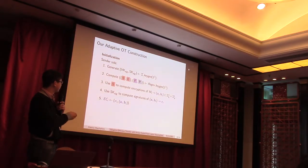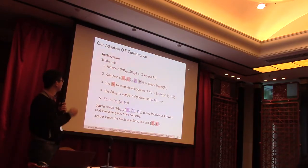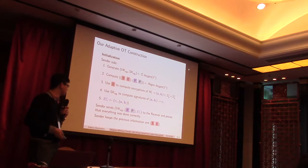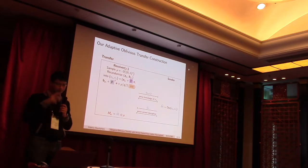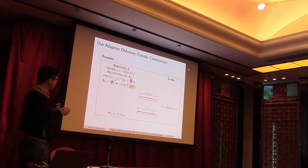We use the Regev encryption scheme and encrypt everything, plus sign everything. And then the sender sends everything to the receiver at the end of the initialization phase and prove that everything has been done correctly. Then, we enter the transfer phase, where the receiver wants to access this message with index ROI.